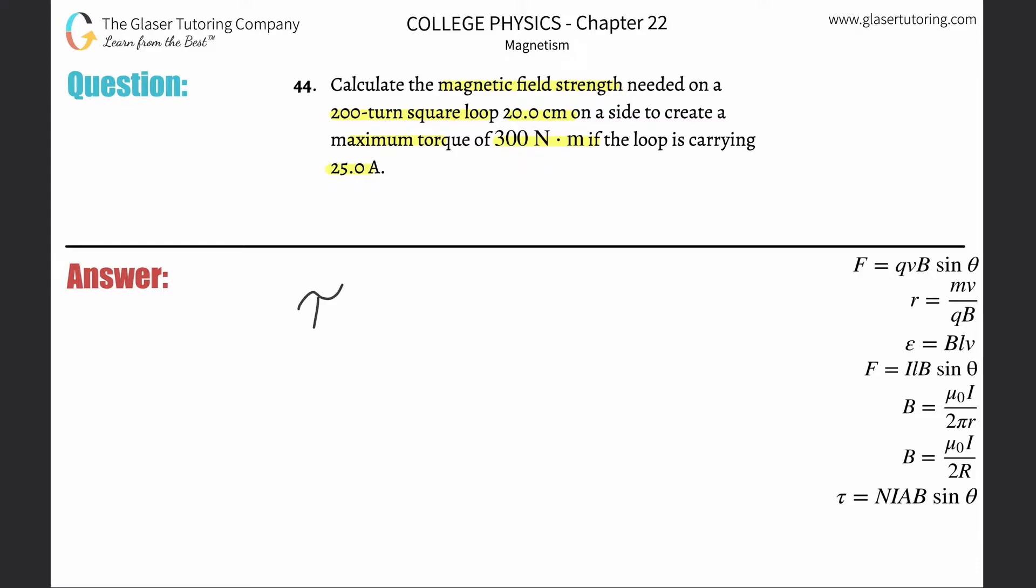The torque on a current-carrying loop of wire will equal the number of turns in the loop multiplied by the current flowing through the loop, or inside of the wire, multiplied by the area of the loop—the area that is experiencing a magnetic field—multiplied then by the magnetic field strength, multiplied then by the sine of the angle. And this angle is between the magnetic field vector and the normal of the area. What is the normal of the area? Please check out number 42, I went through an analysis.